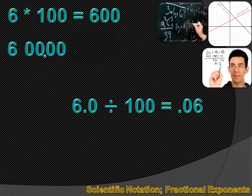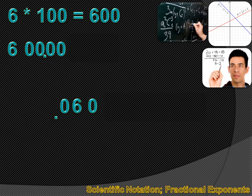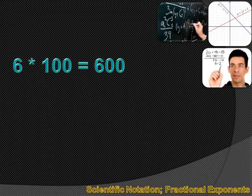When we divide by multiples of 10, we move the decimal point to the left to make the number smaller. 6.0 divided by 100 equals .06 — we move the decimal place two to the left and stick a zero in the blank space. We know 6 times 100 equals 600, and since 100 equals 10 squared, we can say 6 times 10 squared equals 600.